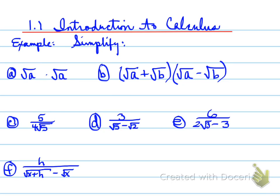Looking at the first one, part A, if you look at that question, you're going to say root A times root A. Automatically, all of you should be saying that the answer to that is A.